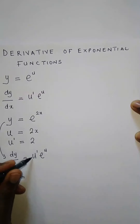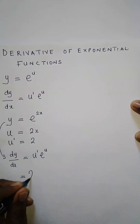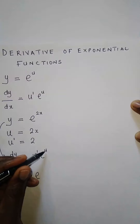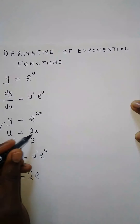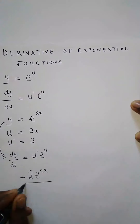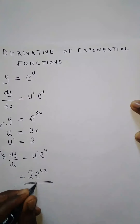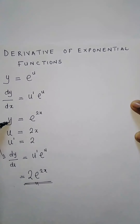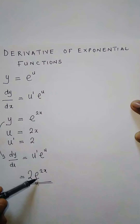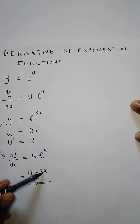Our u prime is 2, and then e to the power u — our u is 2x — so we put it back there. So this is the derivative: the derivative of y equals e to the power 2x is 2e to the power 2x.